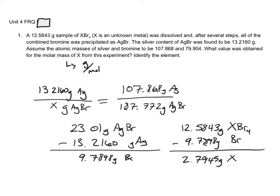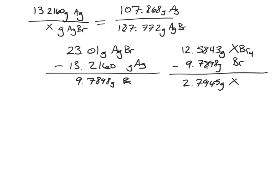Now that alone doesn't help me very much, but I'm almost finished with the problem. What I'm going to do is take the mass of Br and use stoichiometry to figure out if I have 9.7898 grams of Br, how many moles of X would I produce? So I'm going to scroll up to give myself a little bit more room here and execute this problem.